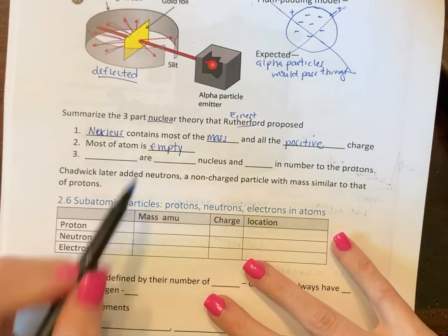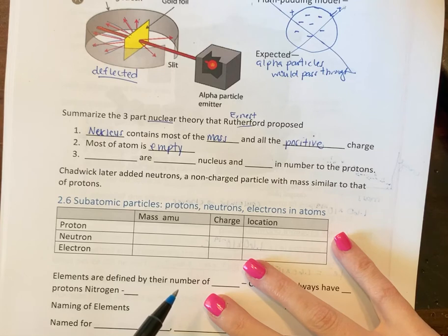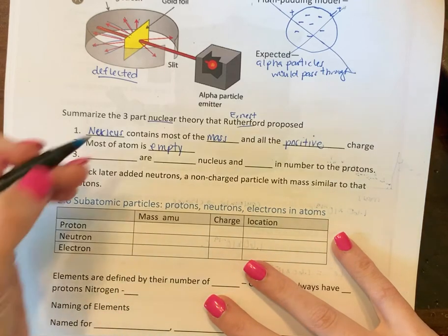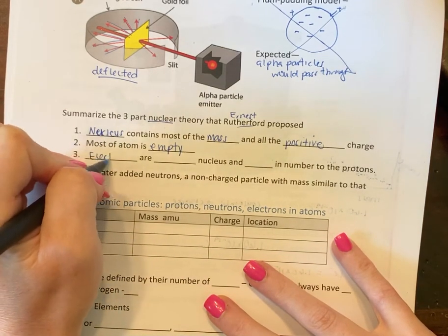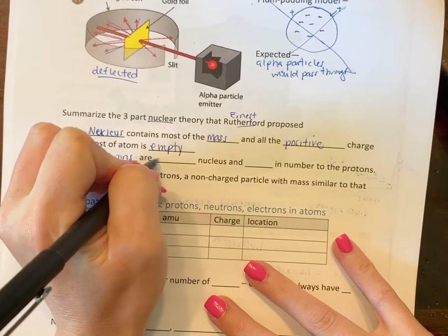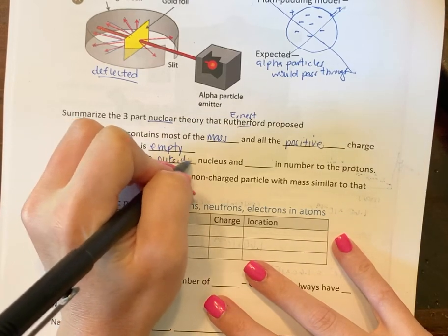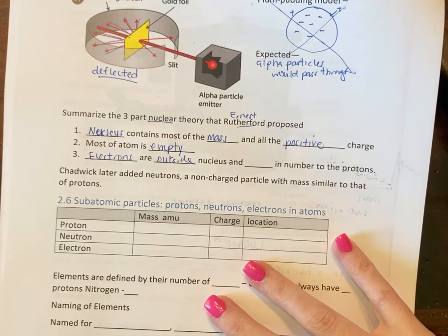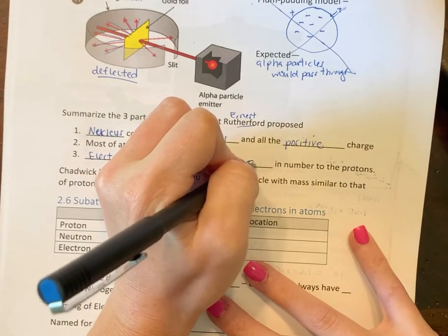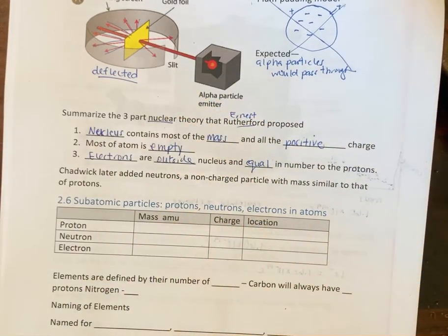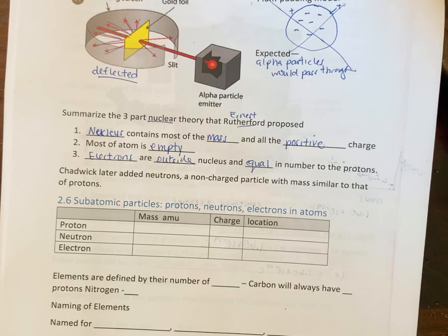So most of the atom is empty space, that is correct. And then the electrons are outside of the nucleus and they are equal in number to the protons because an atom is neutral.